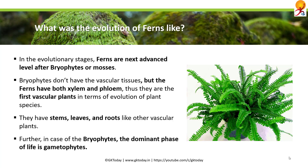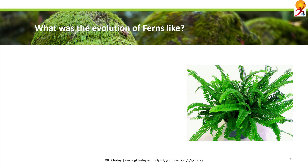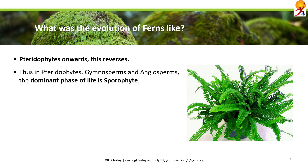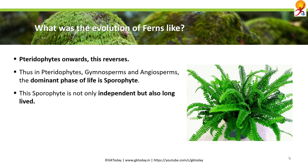In the case of bryophytes, the dominant phase of life is gametophytes. However, in pteridophytes it reverses — and in all types of plants after pteridophytes, including gymnosperms and angiosperms, the dominant phase of life becomes the sporophyte. This sporophyte is not only independent but also long-living. Pteridophytes differ from advanced plants in their reproduction: they differ from gymnosperms and angiosperms in that they do not have flowers or seeds.